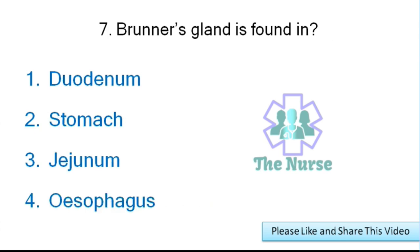Next question: Brunner's gland is found in which part of the GI tract? Options: duodenum, stomach, jejunum, or esophagus. Correct answer: duodenum.